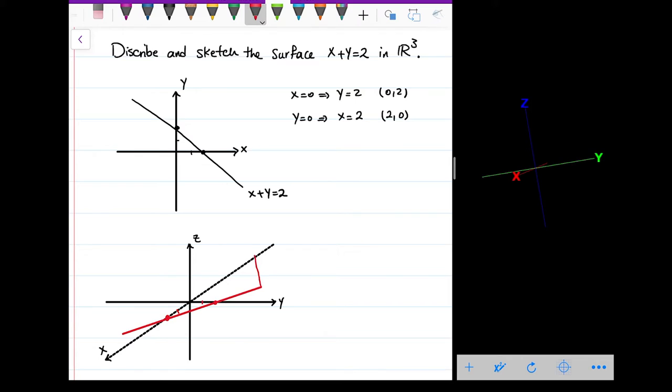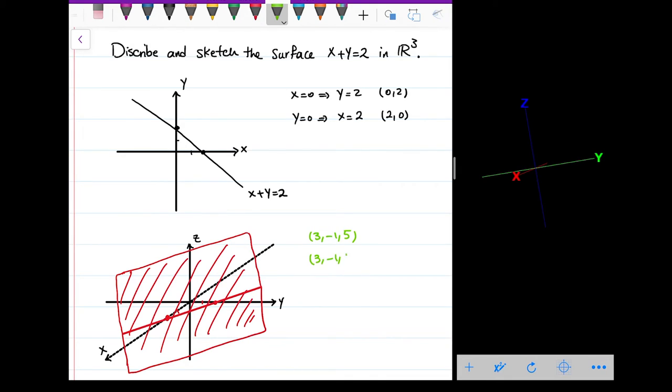So I'm gonna have all the points that have x plus y as their coordinates, and z is free. For example, the point (3, -1, 5), (3, -1, 10), (3, -1, 11), even negative z. So all of these points when we have this relation x plus y equals 2 for the first two coordinates and any number for z...